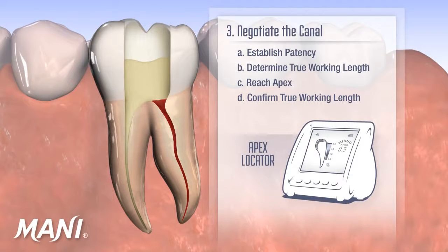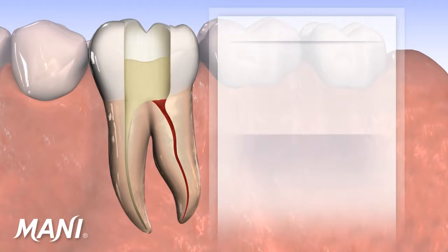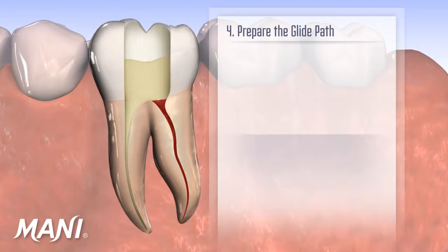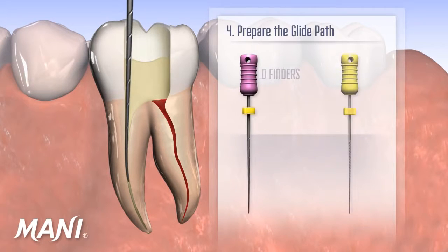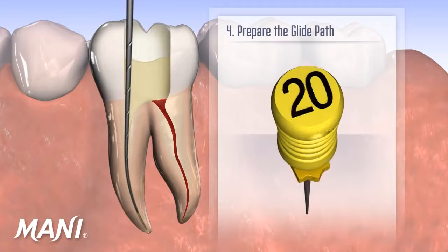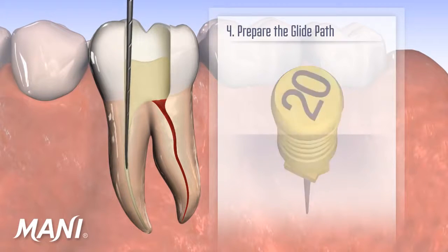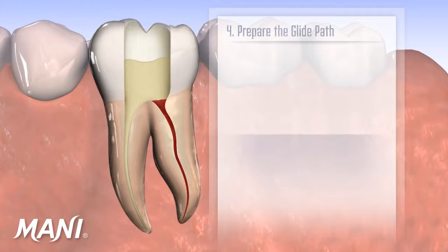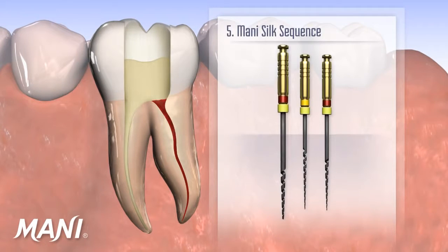To make way for the remaining Mani SILK instruments, a glide path is prepared regardless of whether the clinician is using D-Finders, K-files, or Seco K-files. When the canal is enlarged to approximately a size 20 hand file, the canal is ready for Mani SILK.